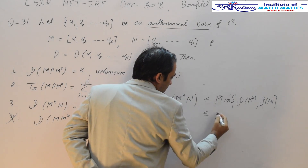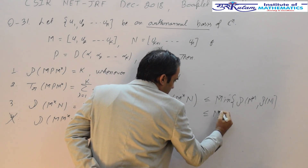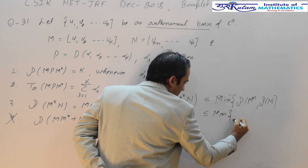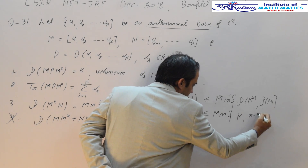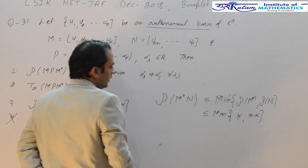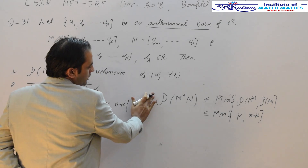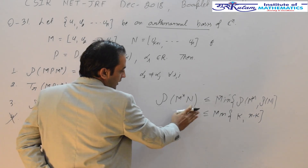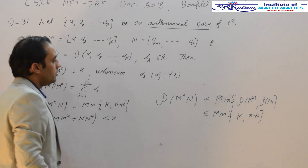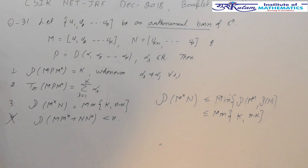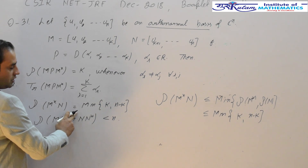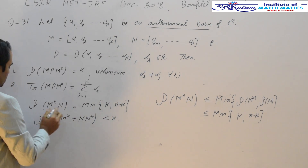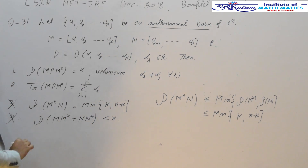This minimum works out to be the minimum of k and n minus k. So the rank of this matrix is less than or equal to that quantity. But in the third option, they are claiming equality, so that option is also incorrect.